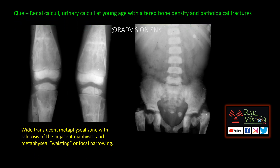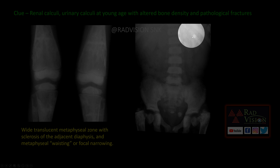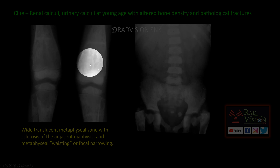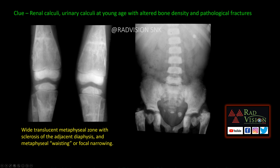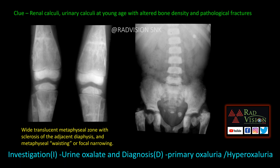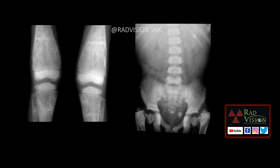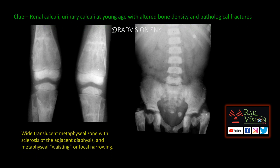In this case, there are renal calculi and vesicle calculi, pathological fractures, and a translucent metaphyseal zone with sclerosis in the diaphysis, which gives the classical metaphyseal wasting appearance. There is also altered bone density in all visualized bones. In a child, altered metabolism of calcium, phosphorus, or oxalates will give rise to calculi. This was a case of primary hyperoxaluria.